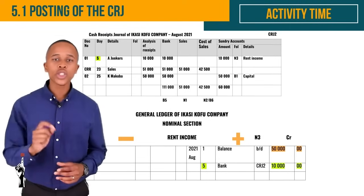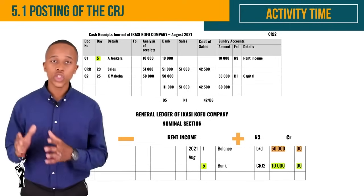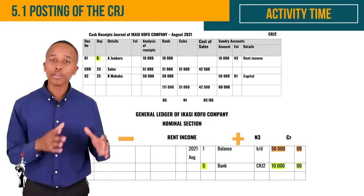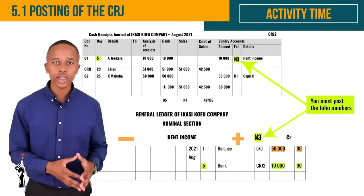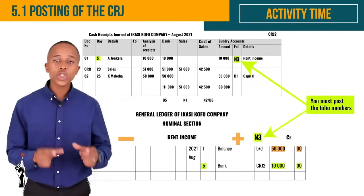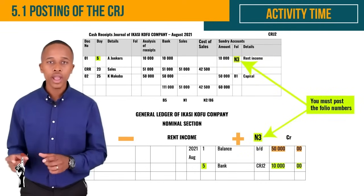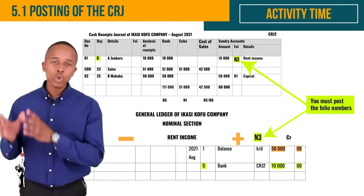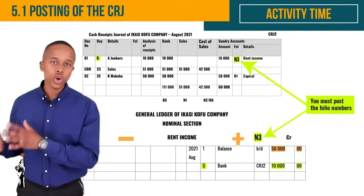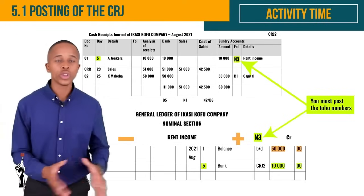Just a note: when posting the CRJ to the general ledger, you must post the folio numbers — this shows that the amount was posted from the CRJ to the general ledger. That's it for lesson 5.1. In lesson 5.2 we'll be looking at how to post the CPJ into the general ledger.